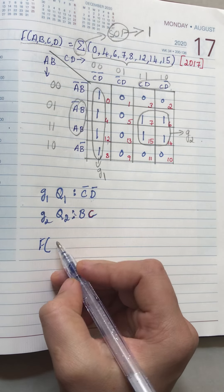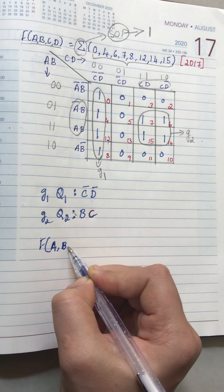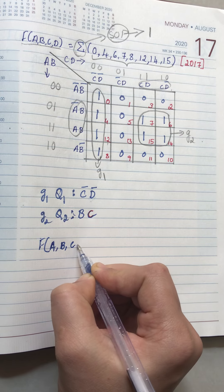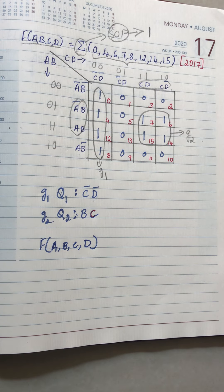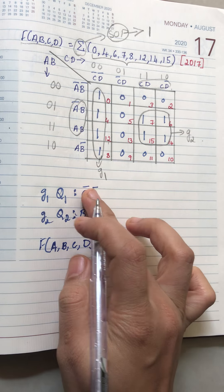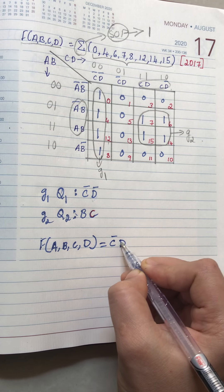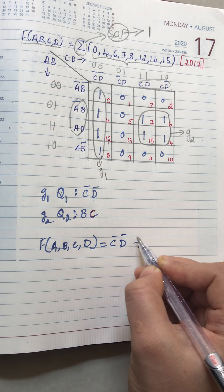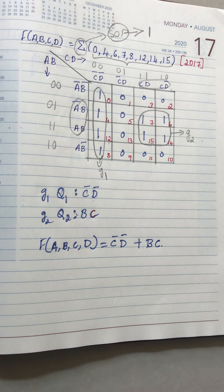That is all for the expression. Now we write the overall expression: f of a, b, c, d is equal to c-bar d-bar plus b c. This is the overall simplified expression.